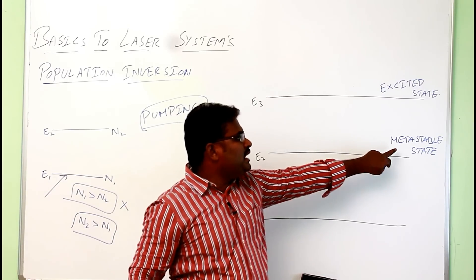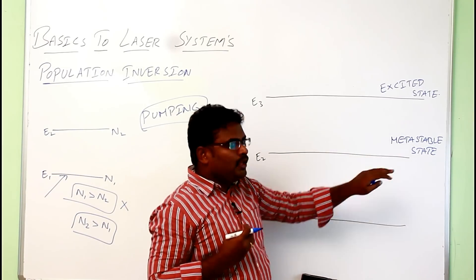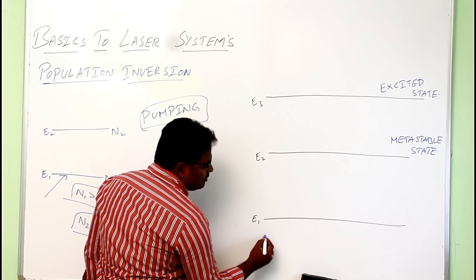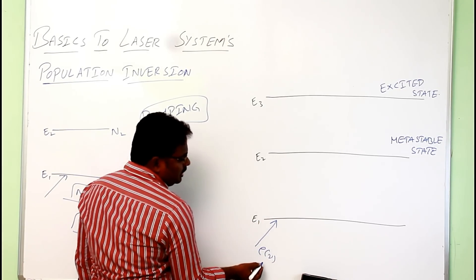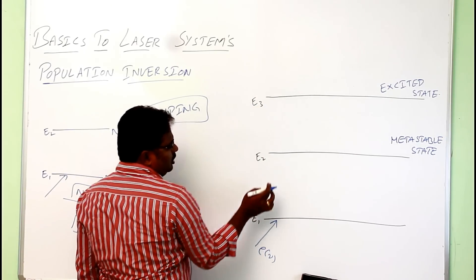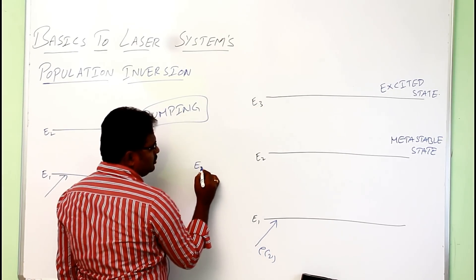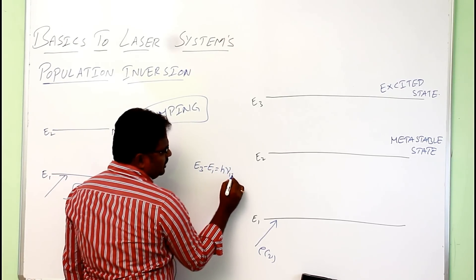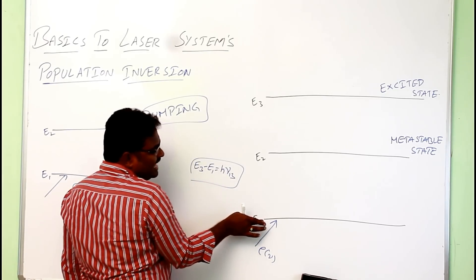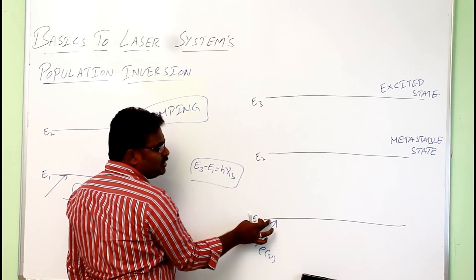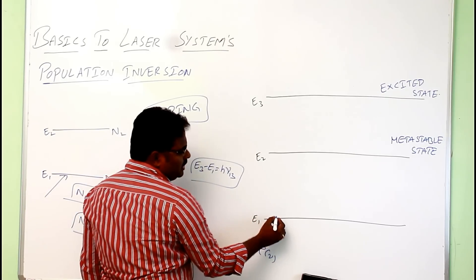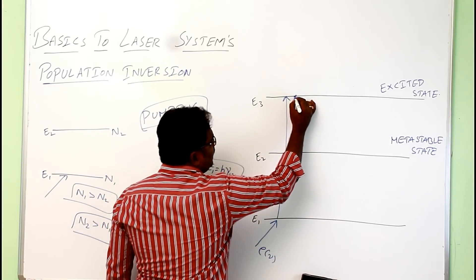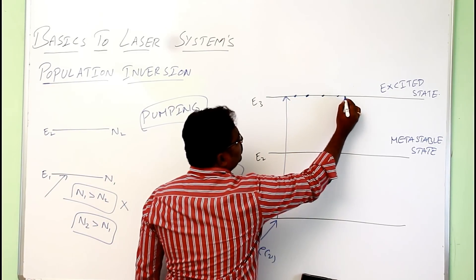The metastable state is where atoms spend more time. At present, all atoms are in the ground state. By supplying energy ρν, where ρν equals the gap between E1 and E3 — that is, E3 minus E1 equals hν₁₃ — atoms will absorb the energy and go to the excited state E3.